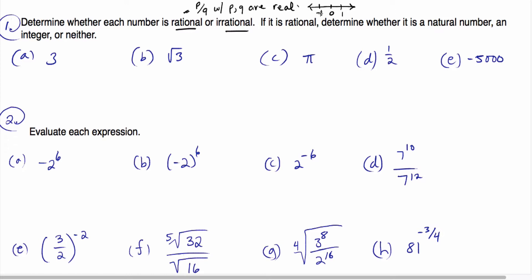These are called integers, and the natural numbers start with one and go up from there. For these examples, we're determining whether each one is rational or irrational. This number is rational because it can be written as a fraction, 3 over 1. The square root of 3 is irrational because there's no way to write it as a fraction P over Q. Pi is also irrational — it has a decimal expansion that keeps going: 3.14159 dot dot dot, and it just keeps changing. The same type of non-terminating decimal expansion indicates an irrational number.